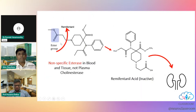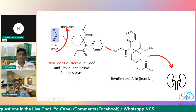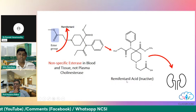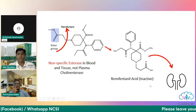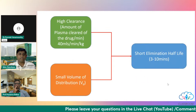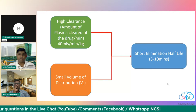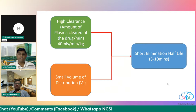The most important property of remifentanil is that it is metabolized by non-specific esterases present in the blood and tissues — not plasma cholinesterase, which metabolizes succinylcholine. The metabolite is remifentanil acid, which is inactive and excreted through the kidney. It has a very high clearance of about 40 ml/min/kg, a small volume of distribution, and a short elimination half-life of 3 to 10 minutes.